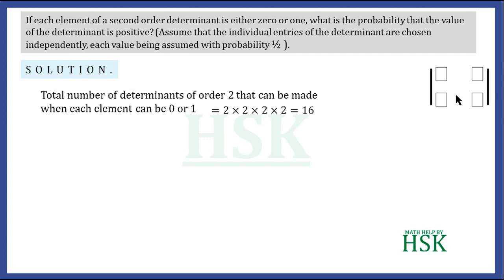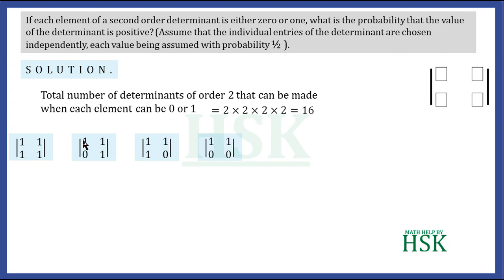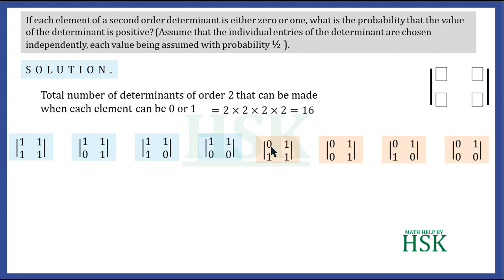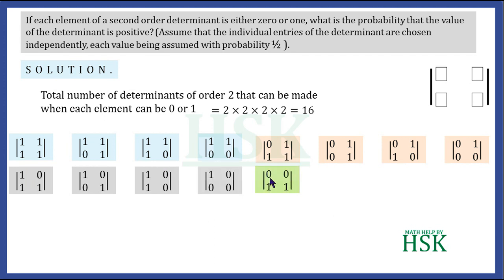The determinants that can be made are listed as follows. First, we consider 4 determinants with first row 1 1 — the second row can be 1 1, 0 1, 1 0, or 0 0. Similarly, if the first row is 0 1, there are 4 more determinants. If the first row is 1 0, another 4 determinants are possible, and if the first row is 0 0, the final 4 determinants are possible.